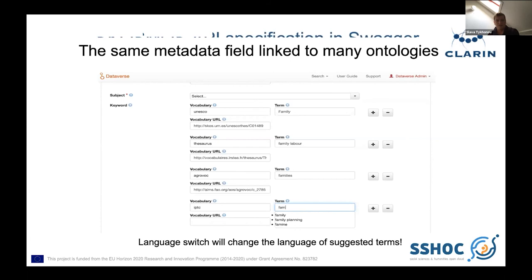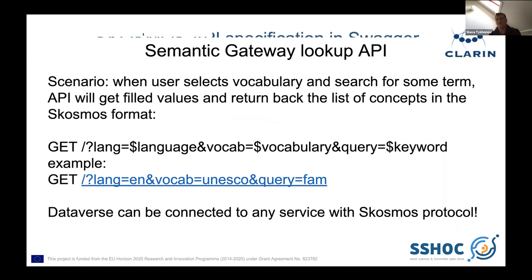Most importantly, in Dataverse you can change the language. If you change the language, for example from English to German or French, you will get a list of suggested keywords in the selected language. But it will still be linked to the same URI, which is essential for linked open data.